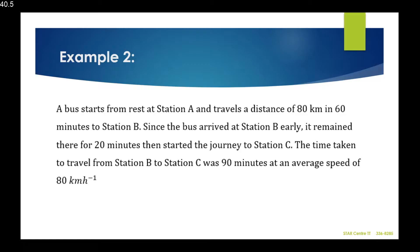Example 2. A bus starts from rest at station A and travels 80 kilometers in 60 minutes to station B. Since the bus arrived early, it remained there for 20 minutes, then started the journey to station C. The time taken from station B to station C was 90 minutes at an average speed of 80 kilometers per hour. We need to read each part carefully.